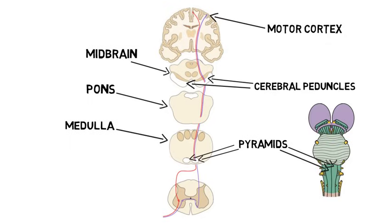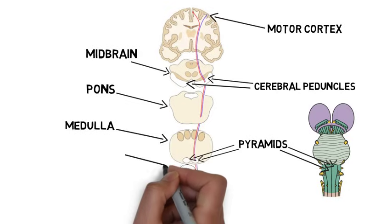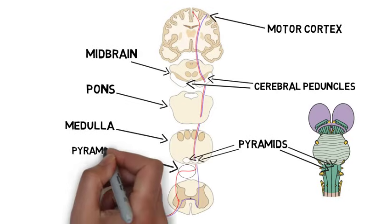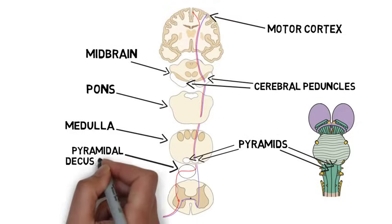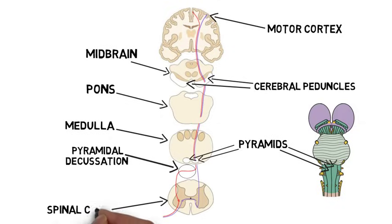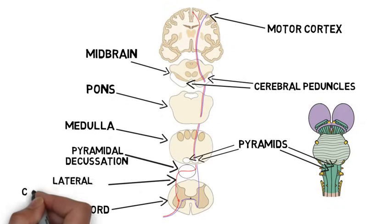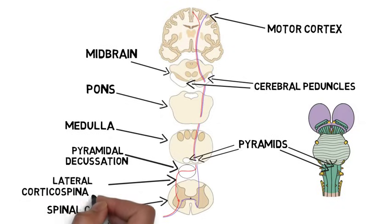At the base of the pyramids, about 90% of the fibers in the corticospinal tract decussate, or cross to the other side of the brainstem in a bundle called the pyramidal decussation. The decussating fibers then enter the spinal cord on the opposite side of the body from where they originated, as part of the lateral corticospinal tract.